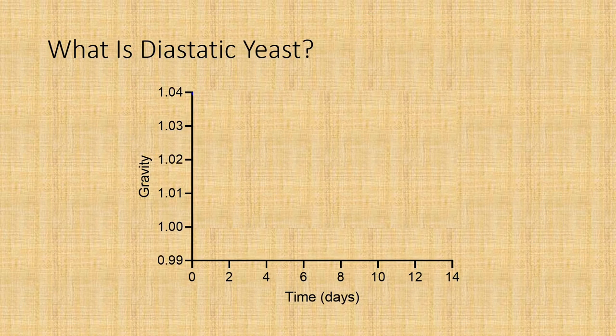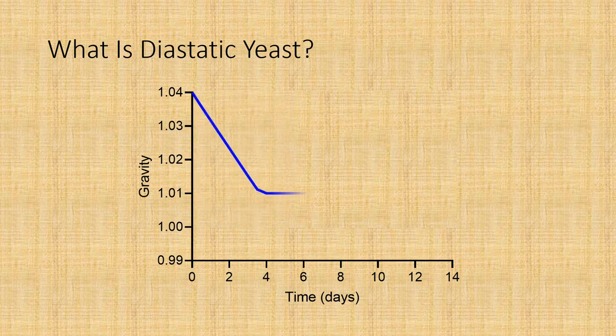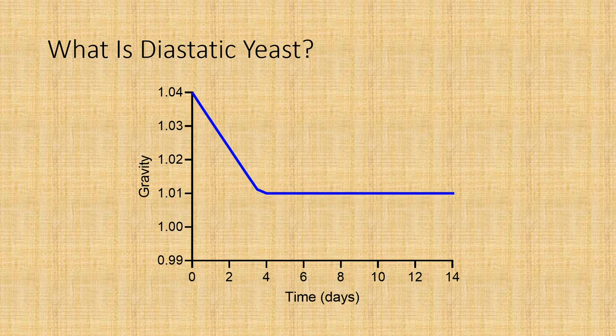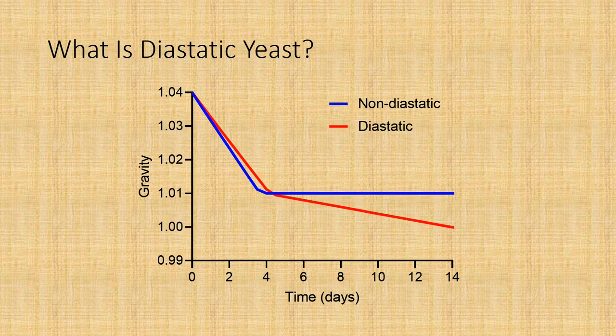So what is a diastatic yeast? Well, if you think of a normal beer that's around 1040 in gravity that you would pitch in a conventional yeast, that beer would ferment over a few days, reaching a terminal gravity of about 1010. And that remaining 10 points of gravity would be those unfermentable dextrans and other sugars that give beer body. So diastatic yeast behave a little bit differently. Initially, they ferment the same as regular yeast, but they will then continue to slowly attenuate the wort right down to a gravity of 1.000 or potentially even lower. So they're able to digest those normally indigestible dextrans.